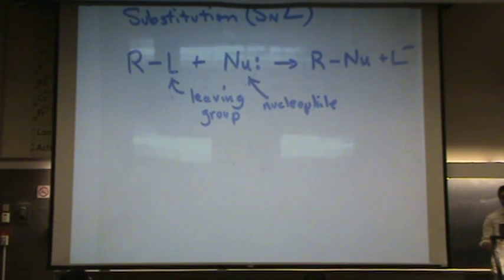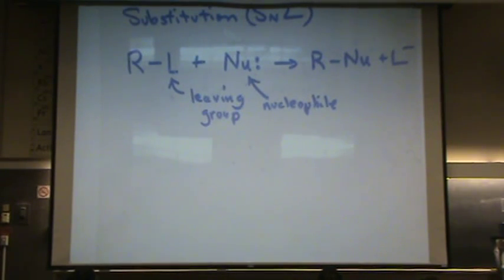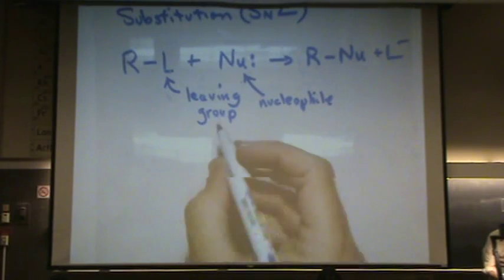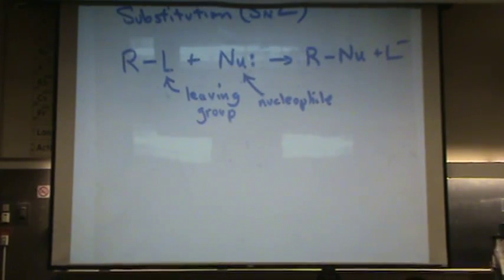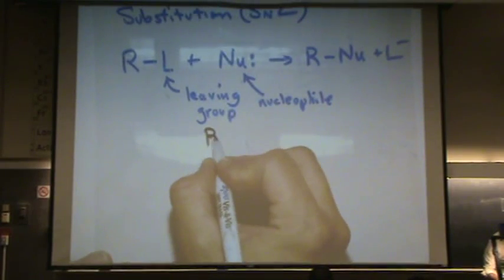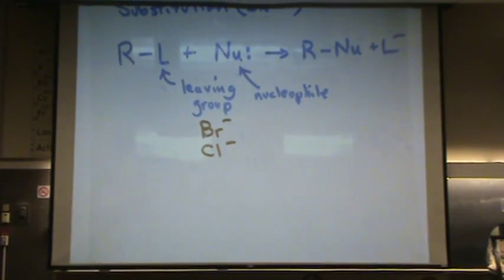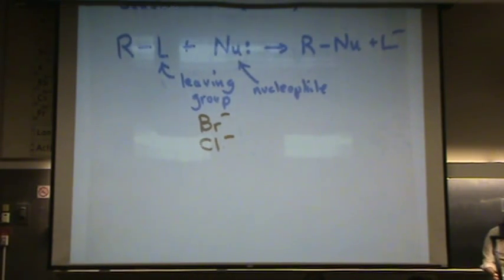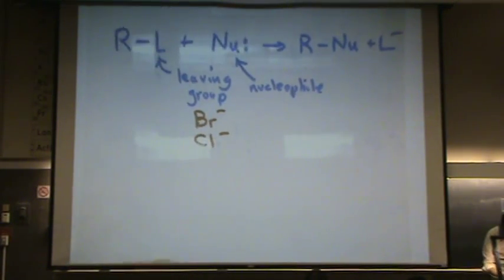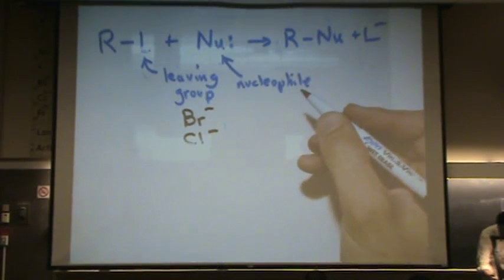This is different from free radical halogenation because hydrogen is not a satisfactory leaving group. So for possible leaving groups, bromine or chlorine are great leaving groups. Those are good.